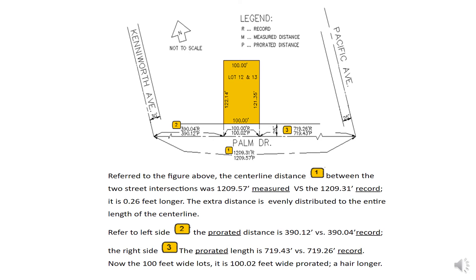Referring to the right side of the property, the prorated centerline length is 719.43 feet versus the record 719.26 feet — it is 0.17 feet longer. Now the 100-foot-wide lot, after proration, becomes 100.02 feet — a little bit longer. Setting property corner tags are based on the prorated distance.